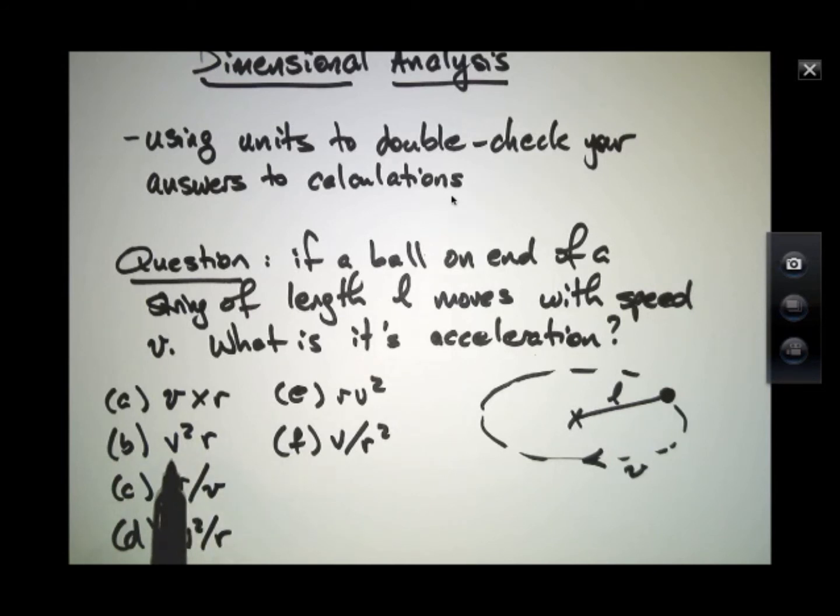And if this one is length squared over time squared and I multiply by yet another length, I have length cubed over time squared. That's not correct.